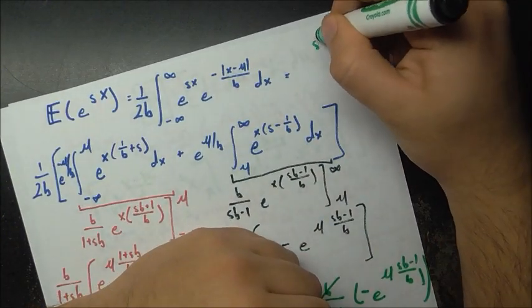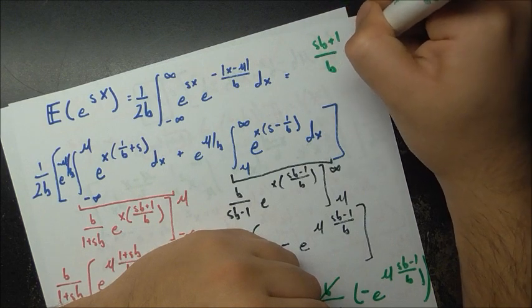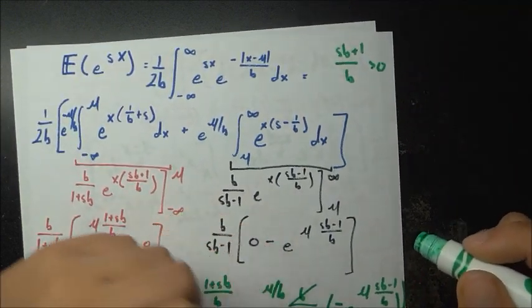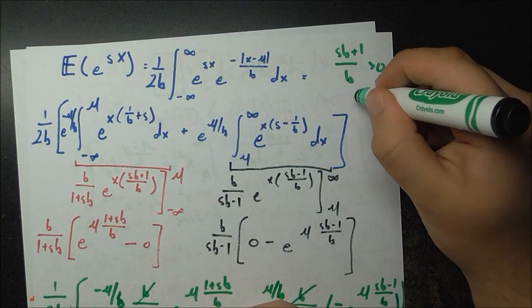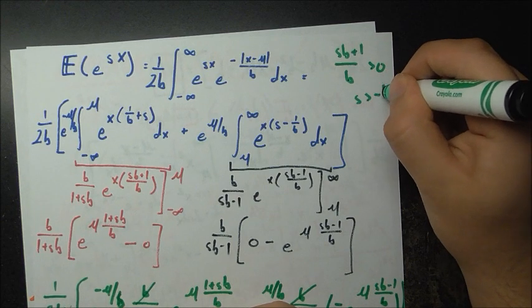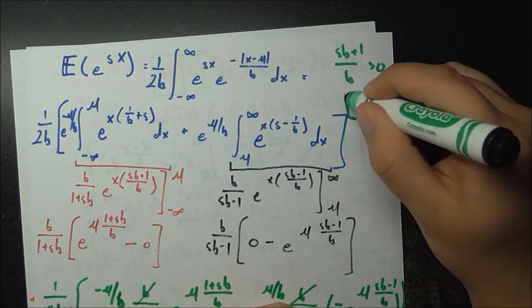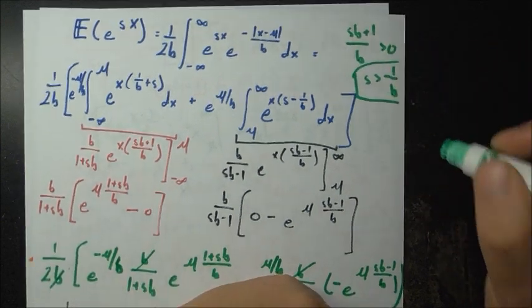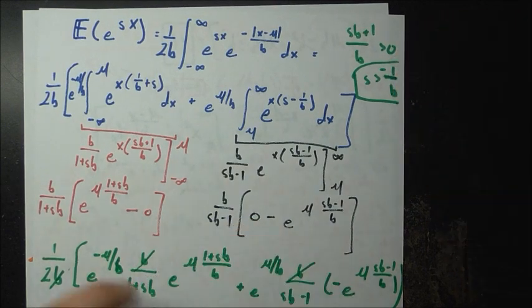This gives the first condition: s·b plus 1 over b must be greater than zero, which is equivalent to s being greater than negative 1 over b.